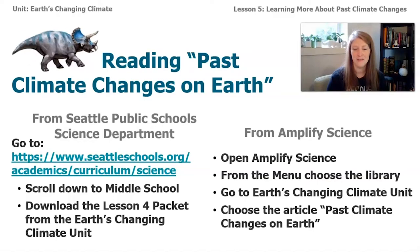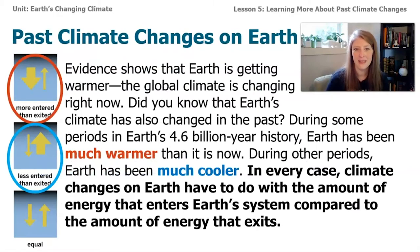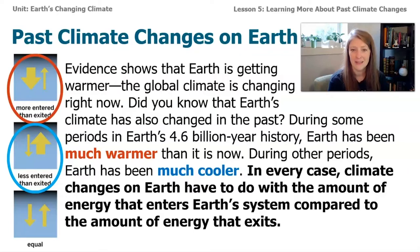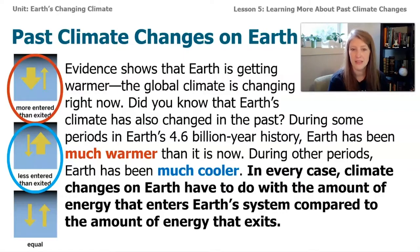Let's read the first couple paragraphs of this article together. The article starts: 'Evidence shows that Earth is getting warmer. The global climate is changing right now. Did you know that Earth's climate has also changed in the past? During some periods in Earth's 4.6 billion year history, Earth has been much warmer than it is now. And during other periods, Earth has been much cooler. In every case, climate changes on Earth have to do with the amount of energy that enters Earth's system compared to the amount of energy that exits.'